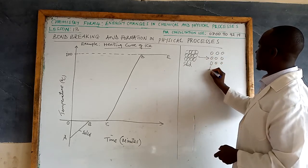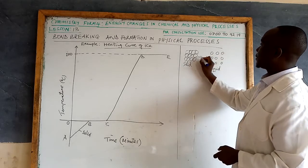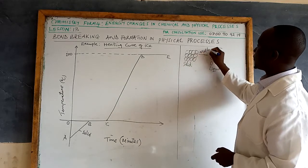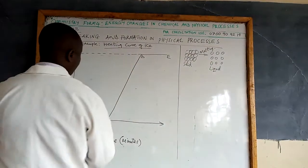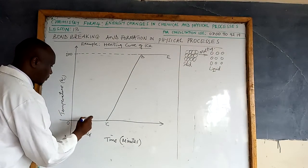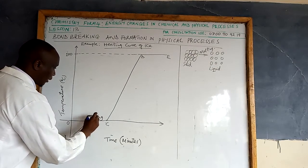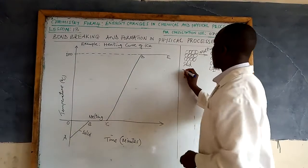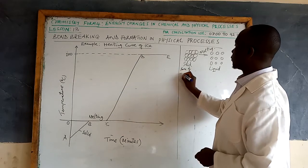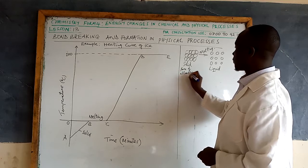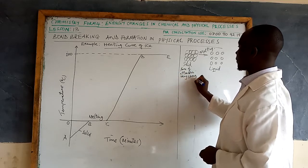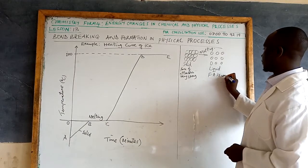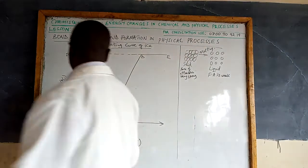In liquid state, the particles are a bit further apart. This process is the melting process. The distance between the particles increases, and this is what we call melting. At this point, heat energy is absorbed to weaken the forces of attraction. In solid state, the force of attraction is very strong, but in liquid state it is weak — it has been weakened by the heat energy that was absorbed.